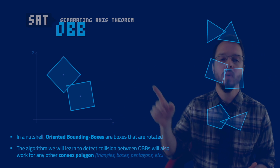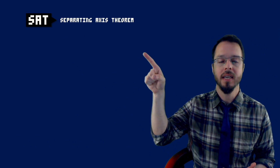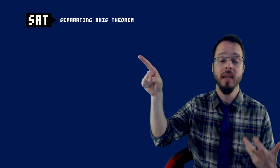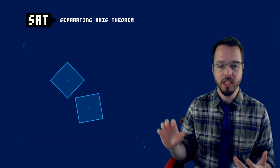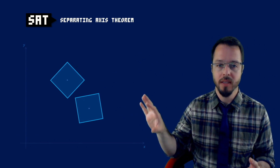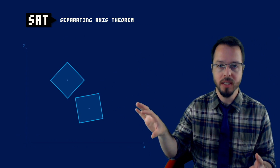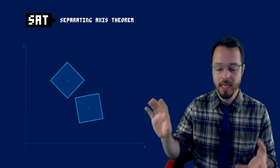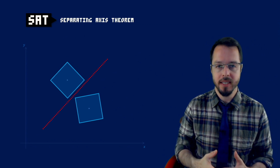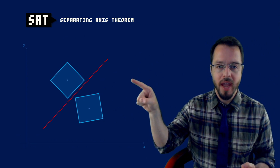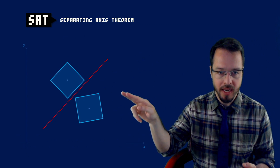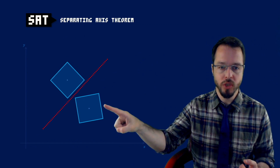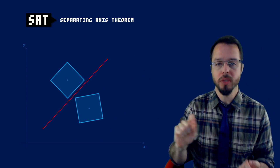This algorithm is going to be super useful because not only for detecting collision between simple boxes — if we have a more elaborate polygon, as long as it is convex, the SAT is going to work well for those shapes as well. We are going to learn the SAT algorithm, or the Separating Axis Theorem. Think that you have these two polygons — they just happen to be boxes in this case, but they are convex polygons.